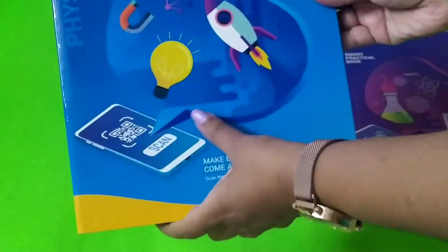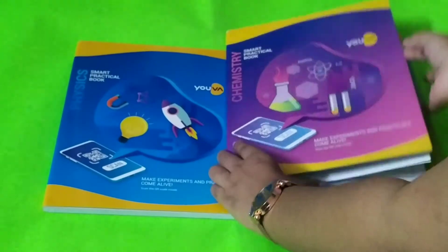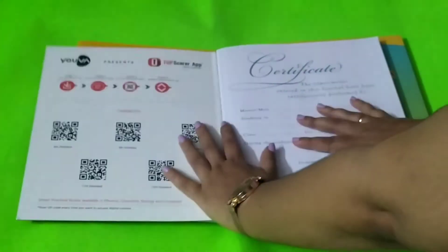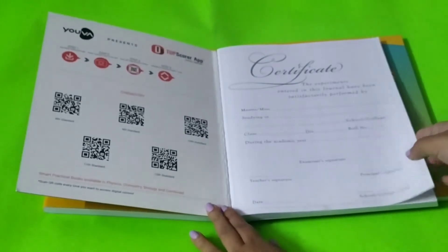Even the pages inside are very much the same to each other. Just the main page, the information given for chemistry is different, biology is different, and physics is different. Otherwise, the pages are the same.